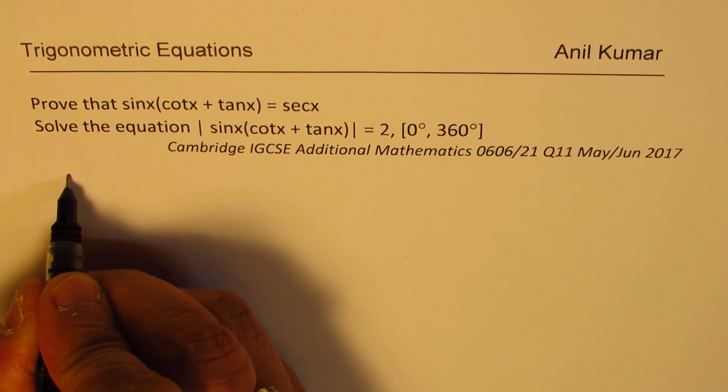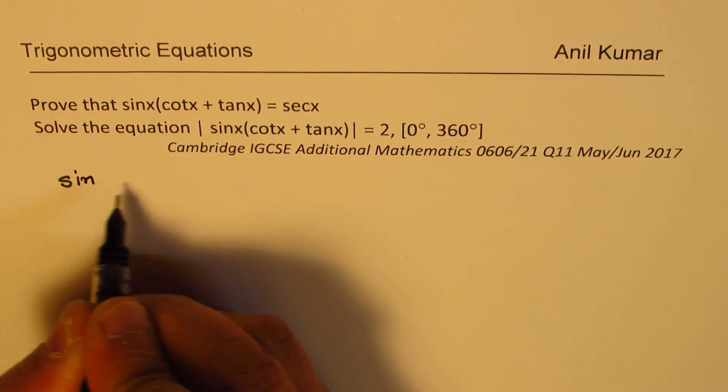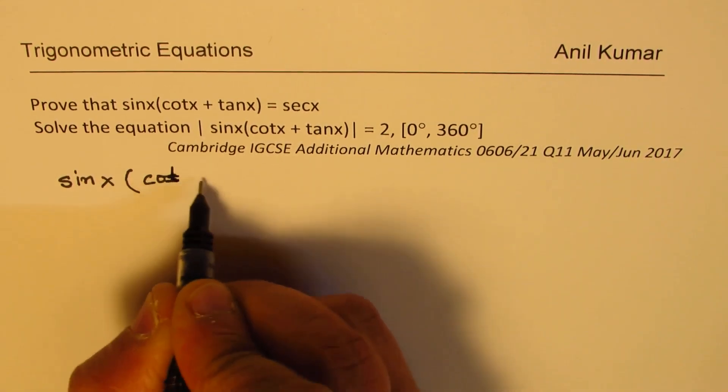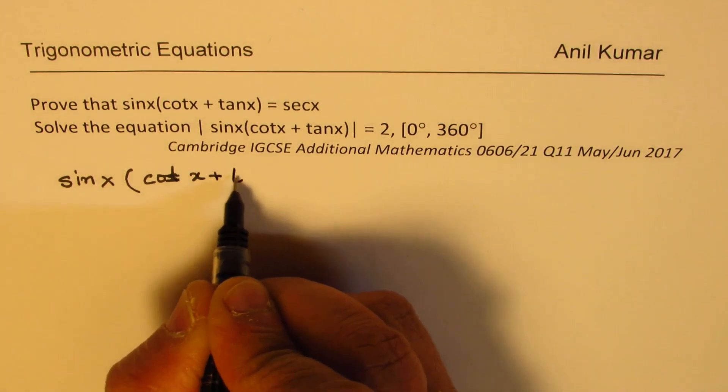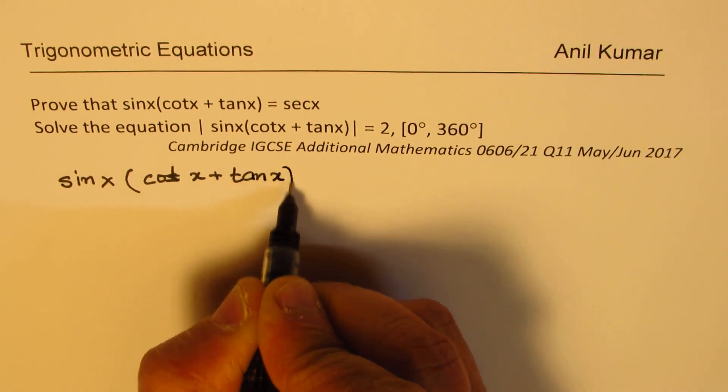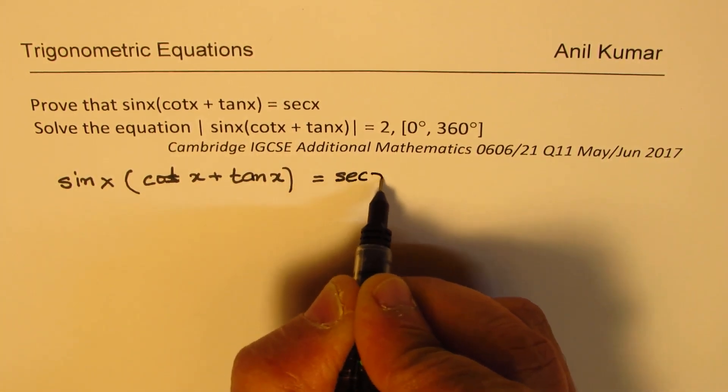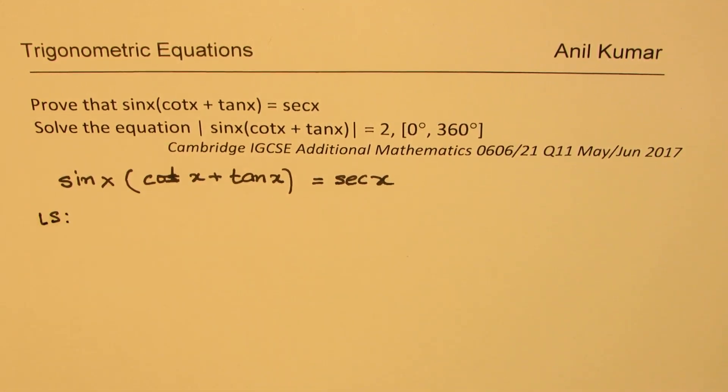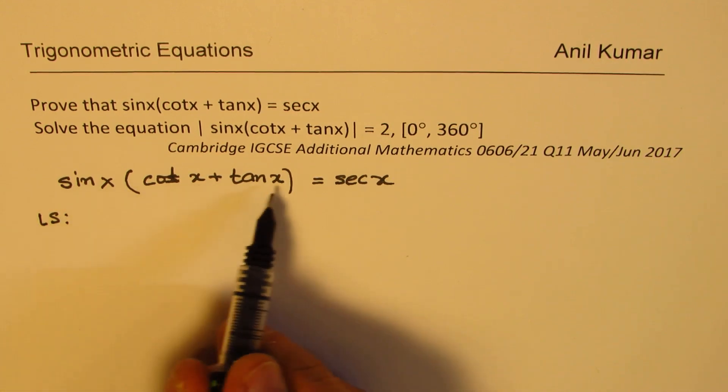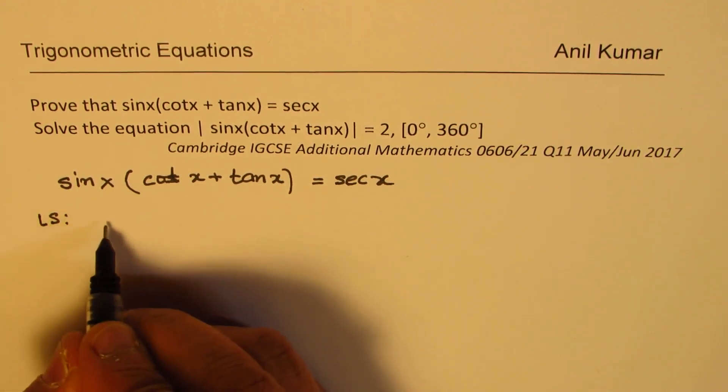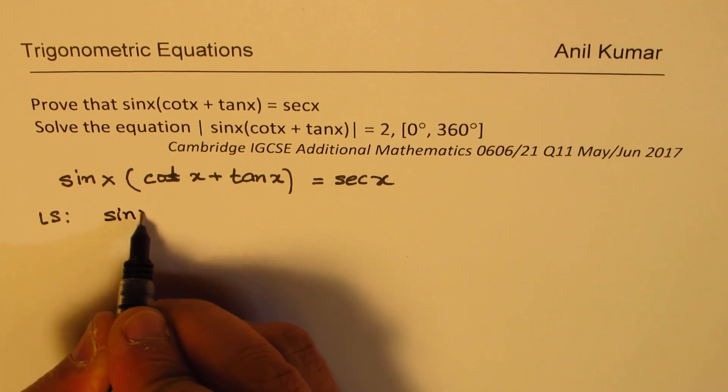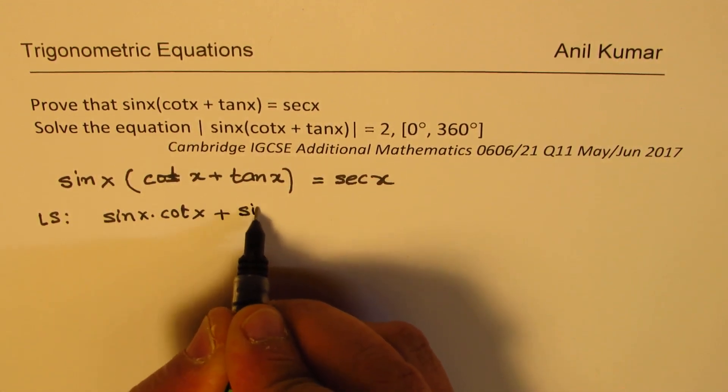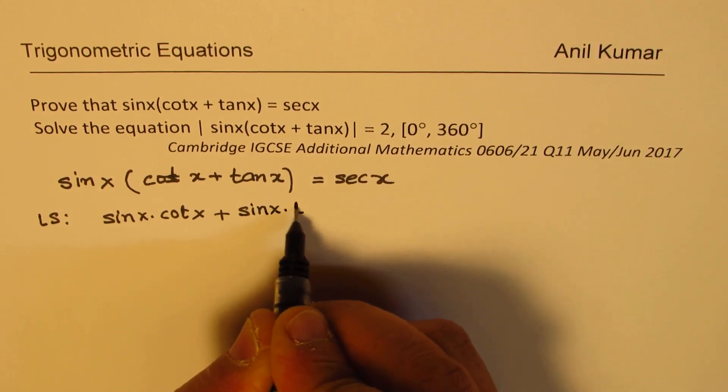So first we need to prove the identity which is sin x times cot x plus tan x equals to secant x. So let's start with the left side. Now we will multiply sin x with cot and tan x. So we get sin x times cot x plus sin x times tan x.